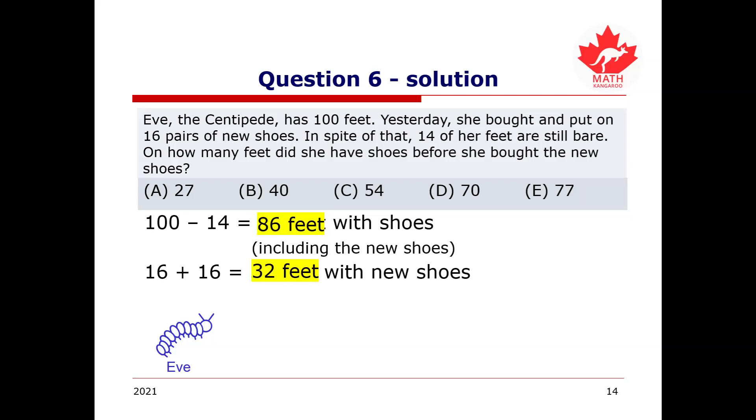So, to find this difference, we can take 86, subtract it by 32, and this will give us 54. Therefore, Eve had 54 feet with shoes on before she bought the new shoes. So, our answer will be C, 54.